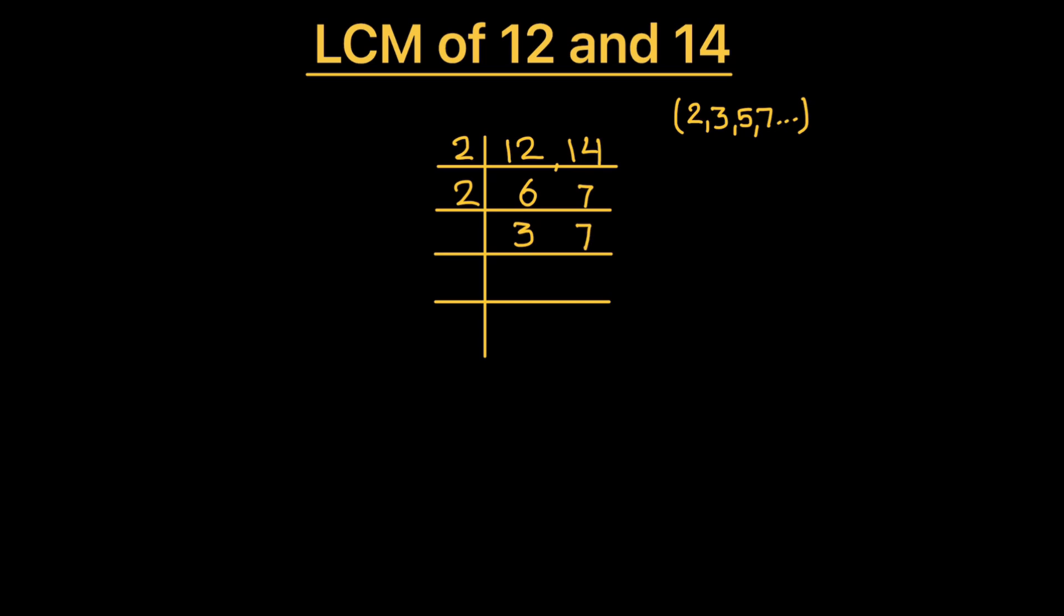Now 3 and 7 both are prime numbers. So first we'll divide 3: 3 times 1 is 3, and 7 will be as is. Then we'll use 7 to divide 7. So this is 1, and 7 times 1 is 7.